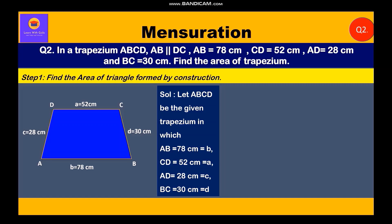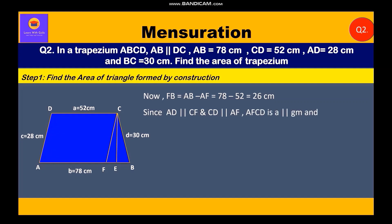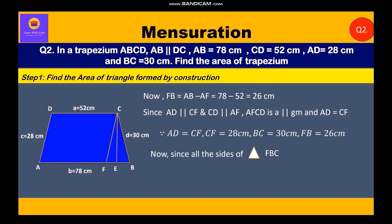Let ABCD be the given trapezium where AB = 78 cm, CD = 52 cm, AD = 28 cm, BC = 30 cm. Construction: through C, draw CF parallel to AD and draw CE perpendicular to AB. Now FB = AB − AF = 78 − 52 = 26 cm. Since AFCD is a parallelogram, CF = AD = 28 cm. So CF = 28 cm, BC = 30 cm, FB = 26 cm. Since all sides of triangle FBC are unequal, FBC is a scalene triangle with height CE.